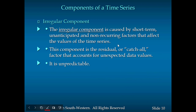The irregular component consists of short-term, unexpected, non-recurring factors or events — for example, a war, a recession or economic downturn, or a natural disaster. It's usually unpredictable and a one-time event, but it can have a significant impact on time-series data or sales.